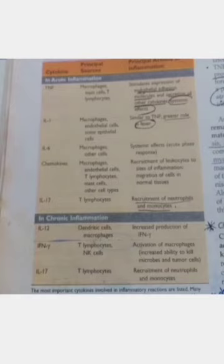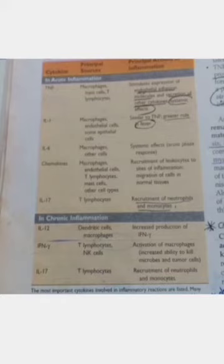Different kinds of cytokines are produced in acute inflammation and chronic inflammation. In acute inflammation, tumor necrosis factors basically stimulate expression of endothelial adhesion molecules and secretion of other cytokines, and have systemic effects. Endothelial activation involves enhanced expression of endothelial adhesion molecules such as P-selectins, E-selectins, or ligands for leukocyte integrins. One cytokine may stimulate another cytokine to synergize or antagonize its action.